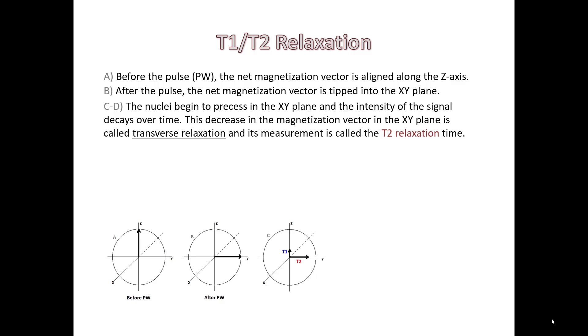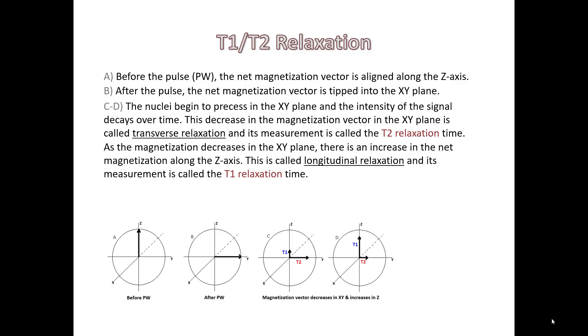This decrease in the magnetization vector in the XY plane is called transverse relaxation, and its measurement is called T2 relaxation. At the same time, there is an increase in the net magnetization along the Z axis. This is called longitudinal relaxation, and its measurement is called the T1 relaxation time. Both are going on simultaneously.